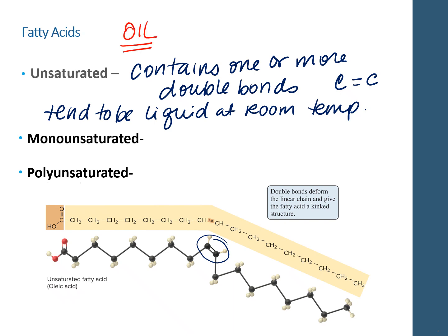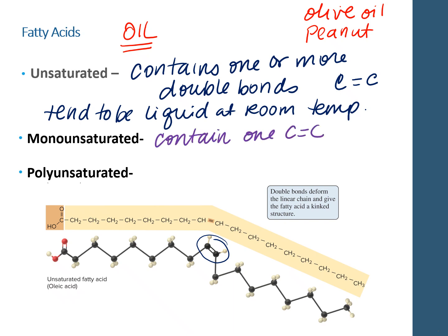You might know unsaturated fats as olive oil, peanut oil, and many of our other plant-based fats. There are two types of unsaturated fatty acids: monounsaturated fatty acids, which contain only one carbon-to-carbon double bond, and polyunsaturated fats, which contain two or more double bonds.